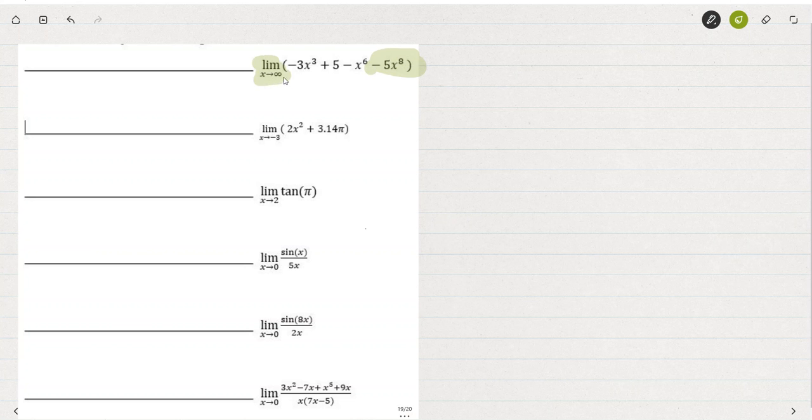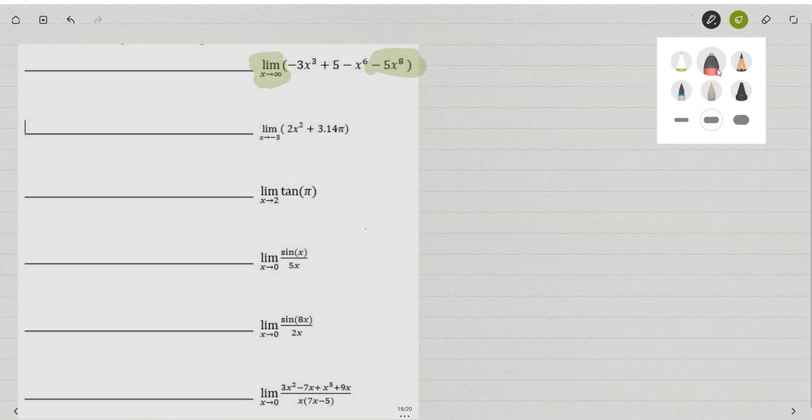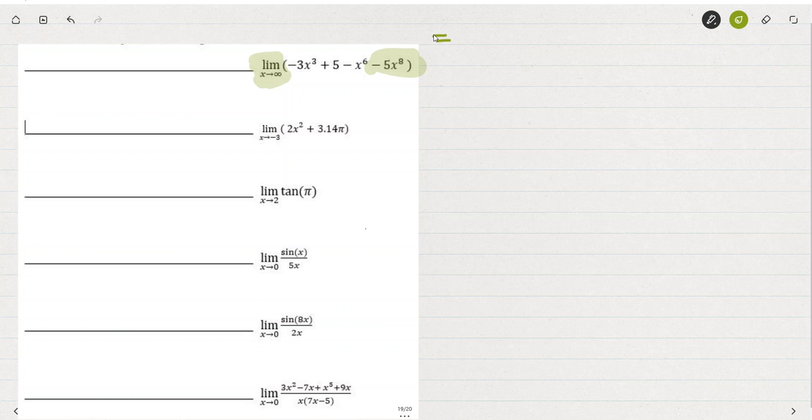When we've got a limit, one of the first things we want to really note is what is the variable approaching? We want a limit as x is approaching infinity. So what I want to notice here is that I could use this fact that the limit as x approaches infinity of a polynomial is equivalent to the limit as x approaches infinity of its lead term.